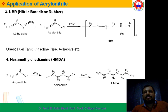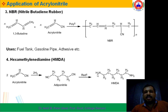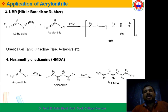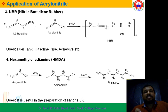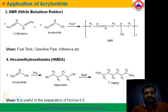From Adiponitrile, reduction forms Hexamethylenediamine. It is called Hexamethylenediamine because there are six methylene CH2 groups and two NH2 groups. The main use of HMDA is for the preparation of Nylon 6-6.